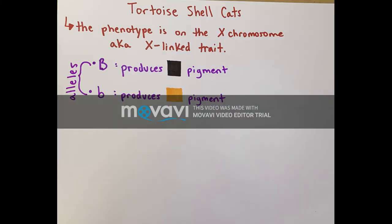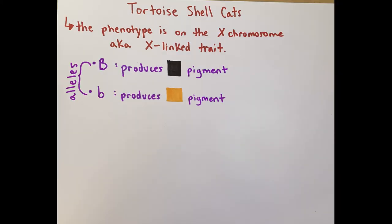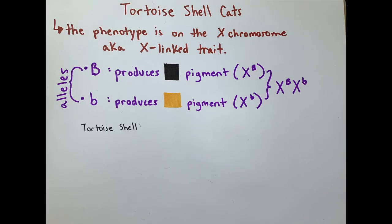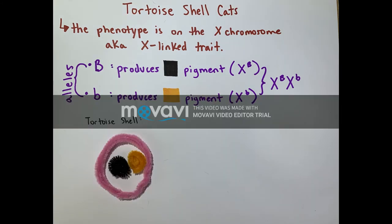These are represented by two alleles: capital B and lowercase b. To have a tortoiseshell cat, you may have both alleles, which are on the X chromosome, which is X-linked, which means the tortoiseshell must be a female in order to have each X chromosome.